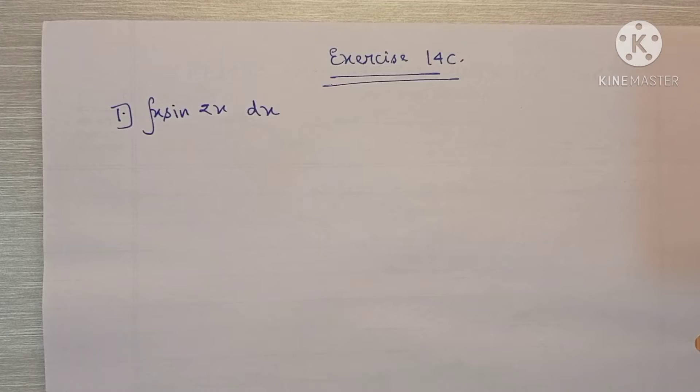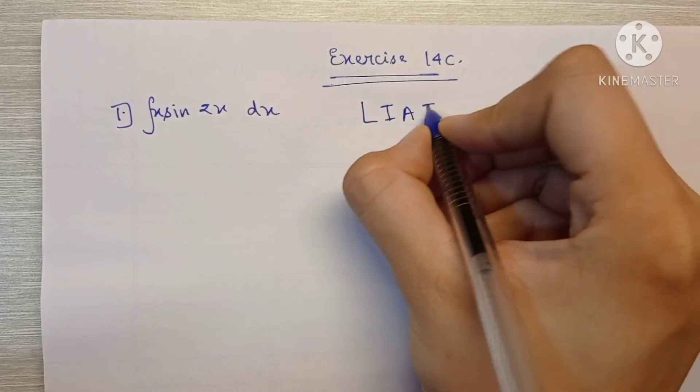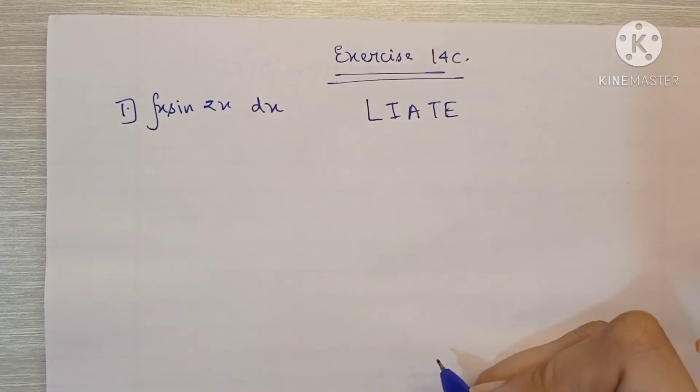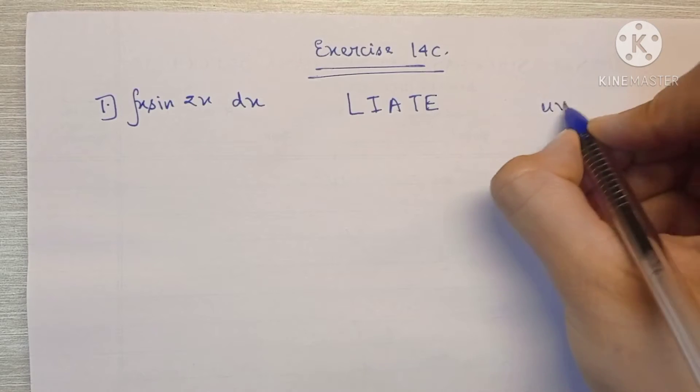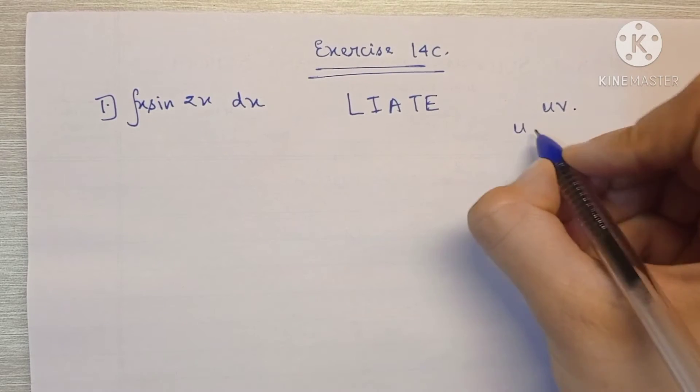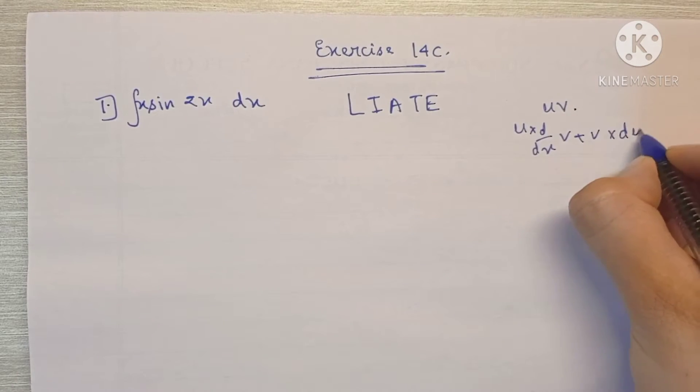For this we'll be using a rule called the LIATE rule. So we know that in differentiation we have the uv rule where we have u into the differentiation of v plus v into the differentiation of u.